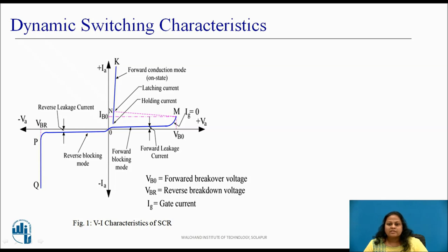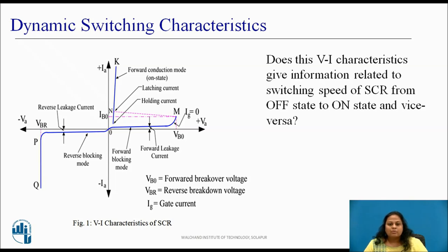In the previous session we discussed VI characteristics of SCR. This characteristics shows relationship between the voltage across the device and the current flowing through it during off state and on state. Now looking at the figure can you tell whether this characteristics gives information about the switching speed of SCR, i.e. from off state to on state and vice versa. Pause the video and think about it.